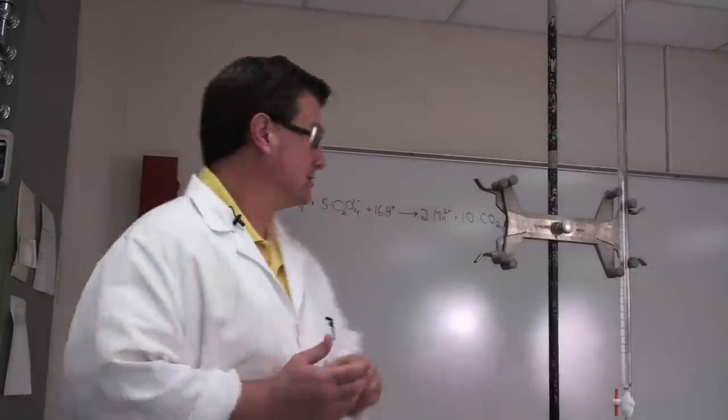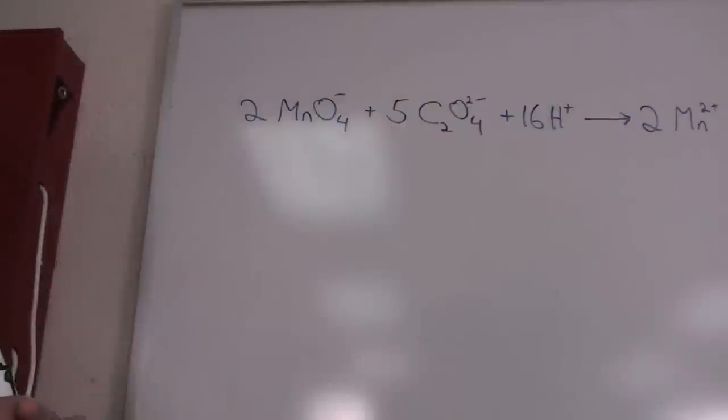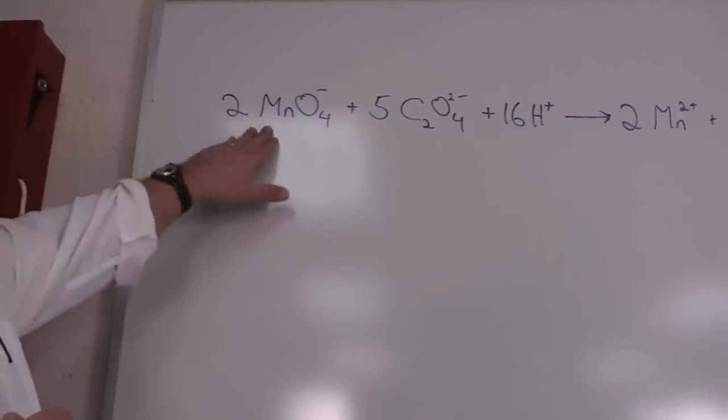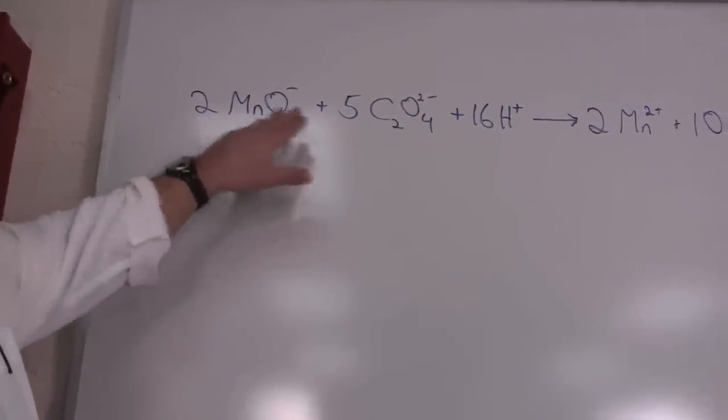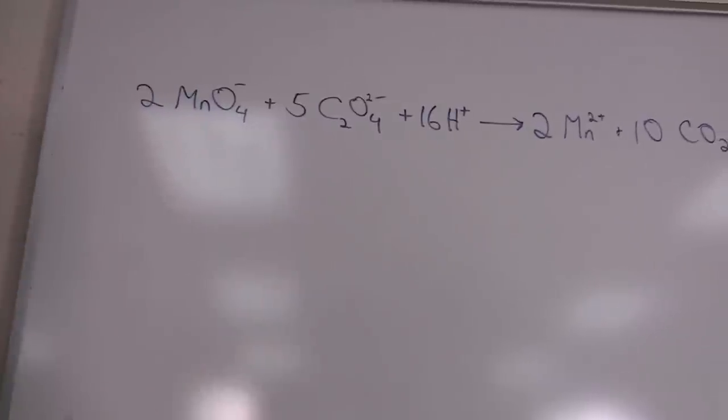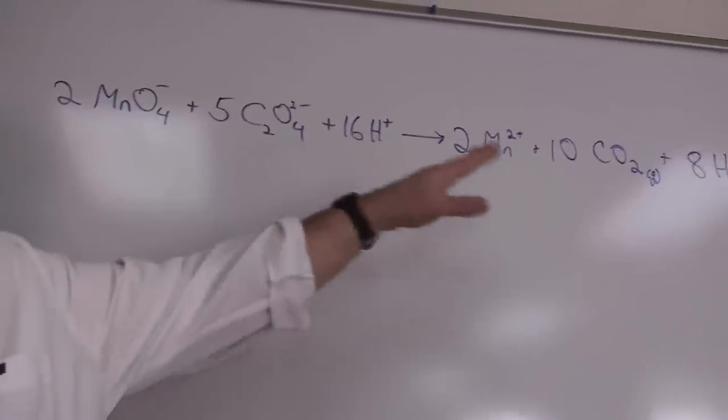I have written the reaction up here on the board. In this reaction, two permanganate ions react with five oxalate ions in the presence of acid to form products.